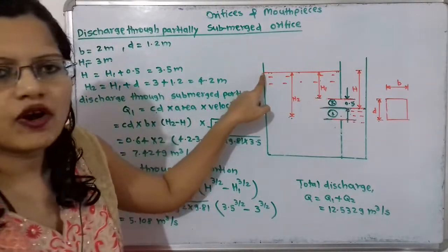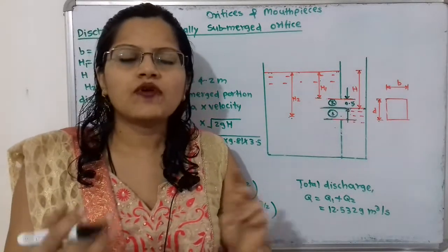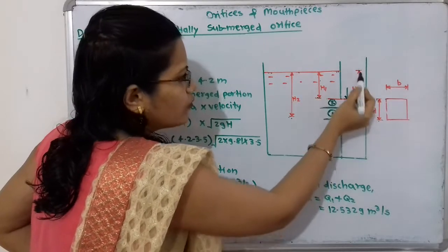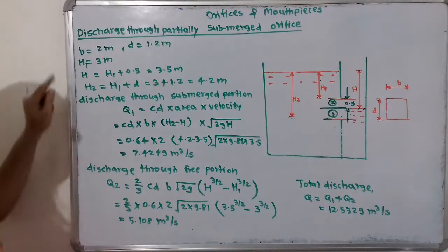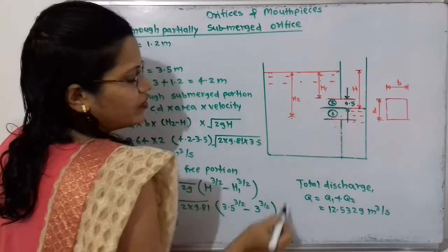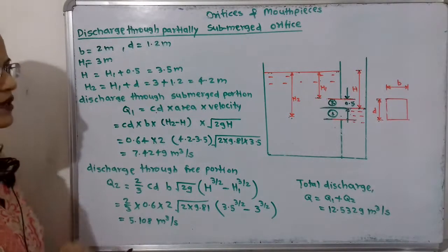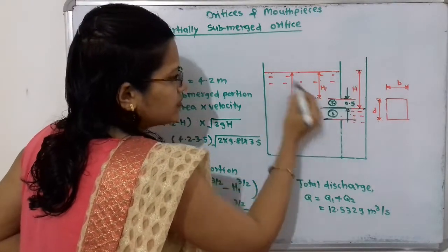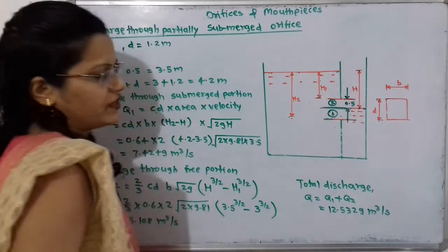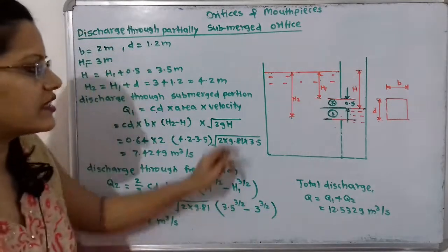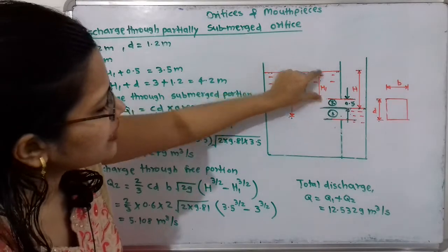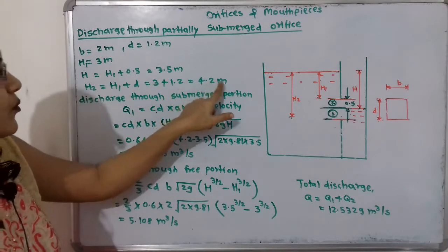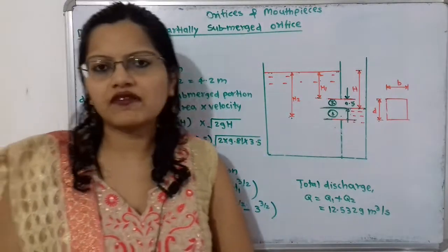Observing the diagram, the difference of water levels on both sides is shown as h. To find h: h = h1 + 0.5 = 3 + 0.5 = 3.5 meter. Next, we find h2, which is the distance from the water surface on one side down to the bottom edge of the orifice. h2 = h1 + D = 3 + 1.2 = 4.2 meter.